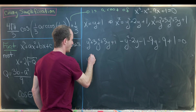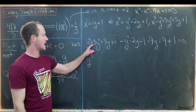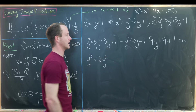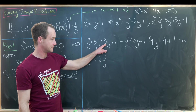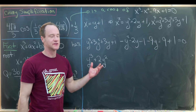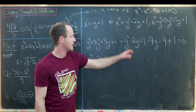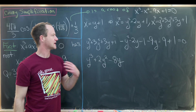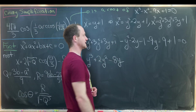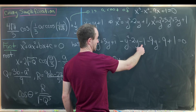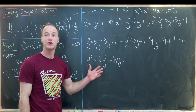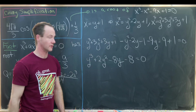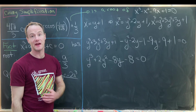Substituting into the cubic and expanding: y cubed plus 3y squared plus 3y plus one minus y squared minus 2y minus one minus 9y minus 9 plus one equals zero. Collecting terms: y cubed plus 2y squared minus 8y minus 8 equals zero. This is more helpful than it seems because squaring two gives four and multiplying into two gives eight, and cubing two also gives eight — suggesting a substitution to get equal coefficients.